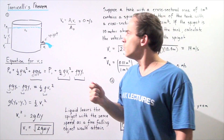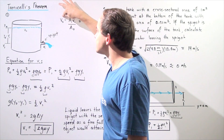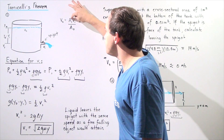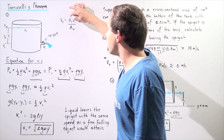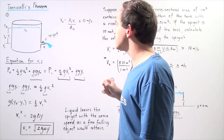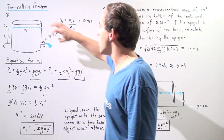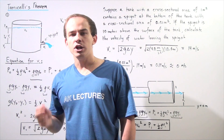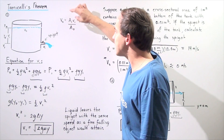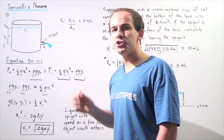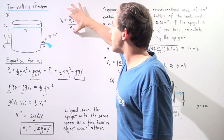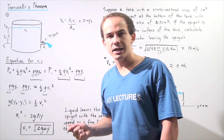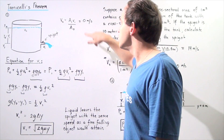Using the equation of continuity, we get the following result: V0 equals V1 times A1 divided by A0, where A1 is the cross-sectional area of the spigot and A0 is the cross-sectional area of the tank. If the tank's cross-sectional area is much larger than the spigot's, the fraction A1/A0 becomes very small, and we can approximate V0 to be zero.